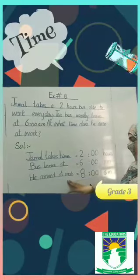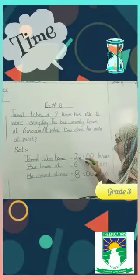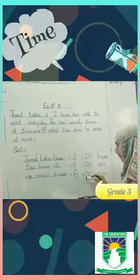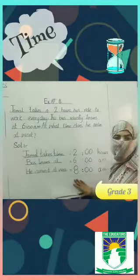He arrives at work. So class, we have to think about the question. We have to add 6 plus 2 equals 8, minutes as it is, am. So he arrives at work at 8 am.